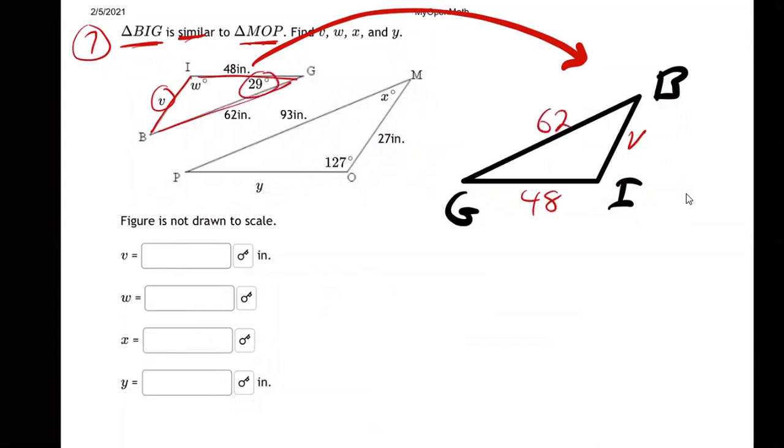The 29 degrees is angle G and the W degrees is angle I. There we go. And now I can just forget about this guy and just compare those other two.